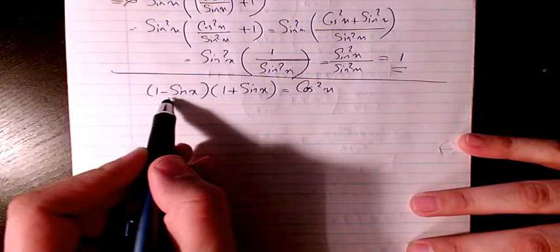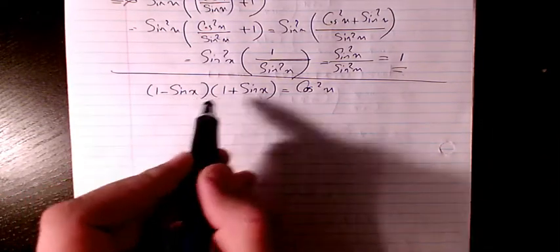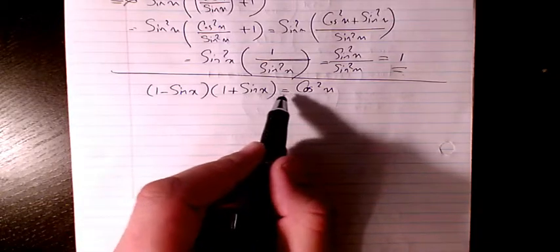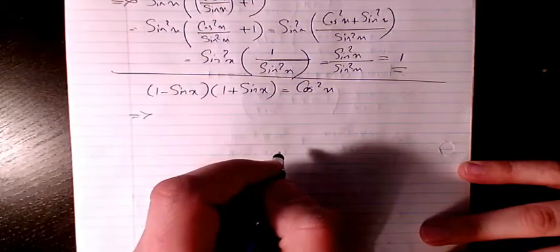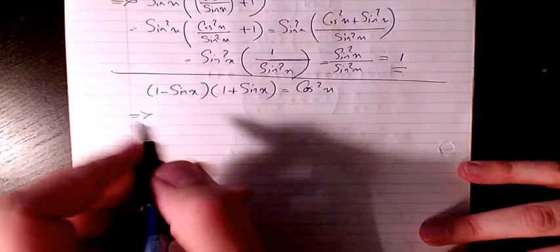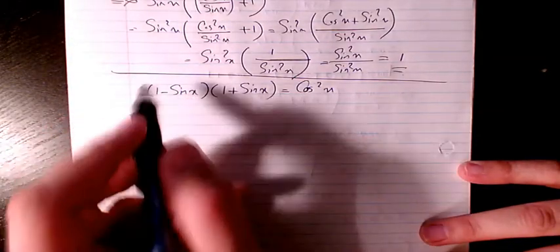So in this video I have 1 minus sine x multiplied by 1 plus sine x, it has to be equal to cosine squared x. Let's see how to solve this example. We have basically two ways to do that.